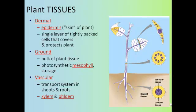Finally you have vascular tissue, which is like the plumbing of the plant. This is where you have the xylem, which transports the water and nutrients from the soil up to the plant, and the phloem, whose job is to transport the sugars.